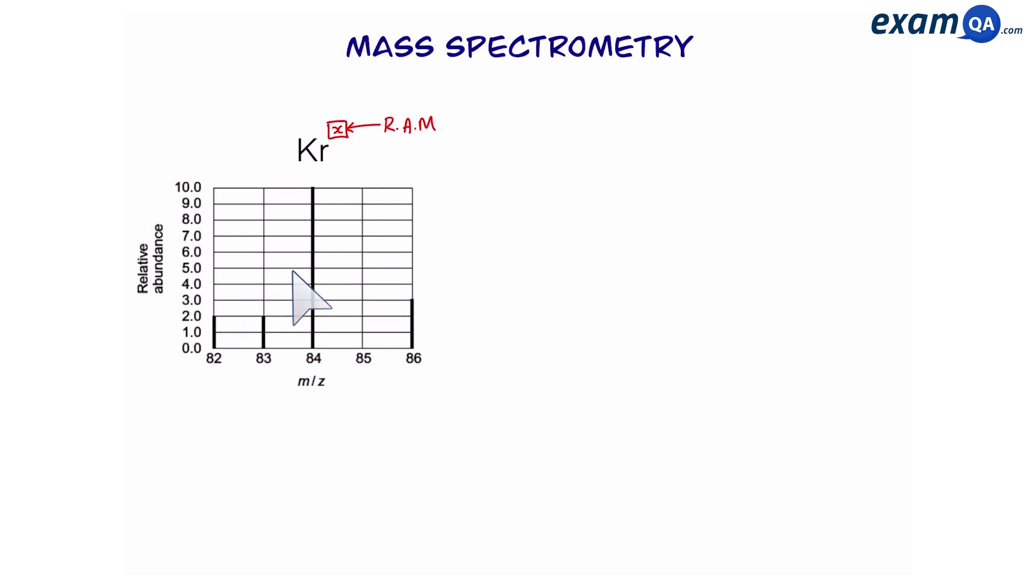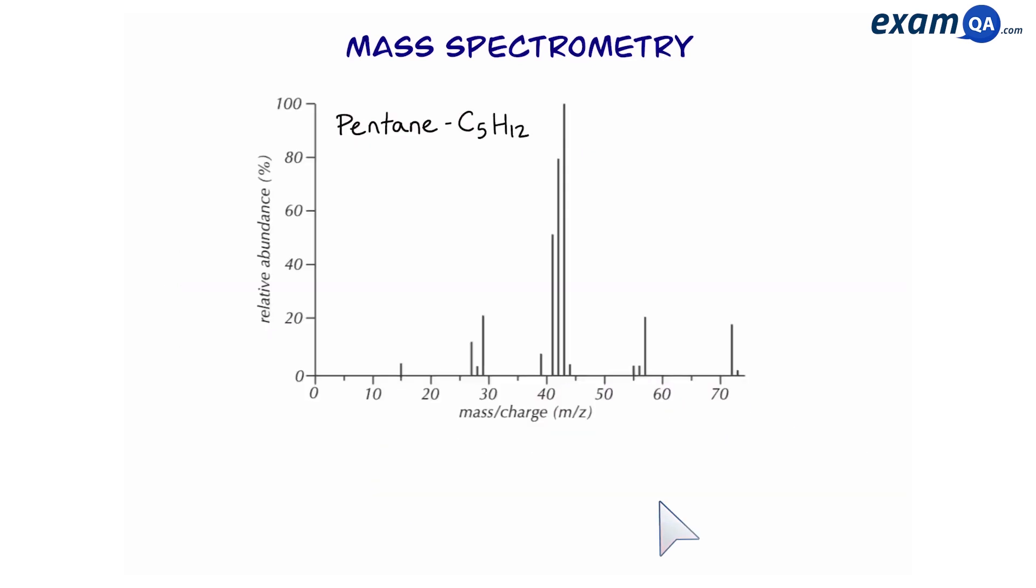Another use of mass spec is to work out the structure of a molecule. This particular spectrum belongs to butanoic acid. So, let's start by looking at pentane. This is the displayed formula for pentane. The molecular mass of pentane is 72. And this peak represents the molecular mass, also known as the molecular ion peak.